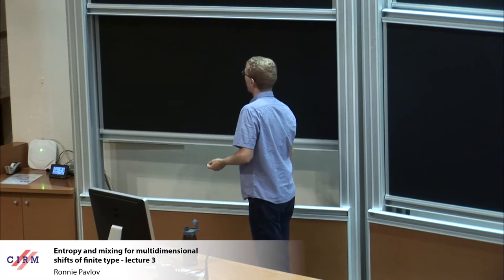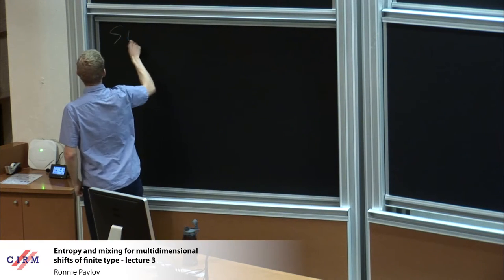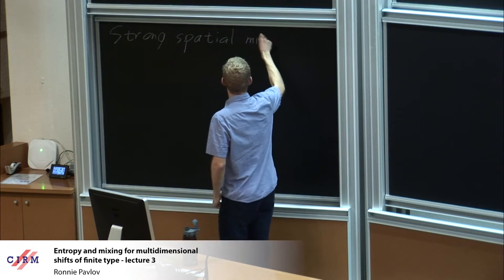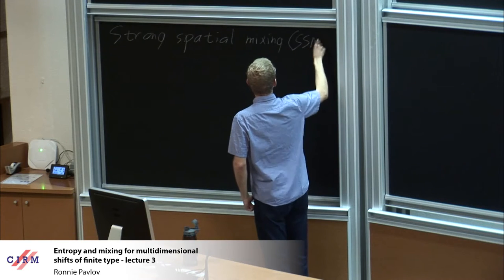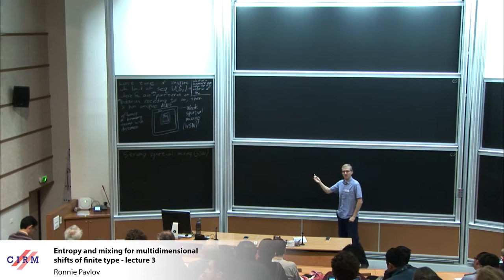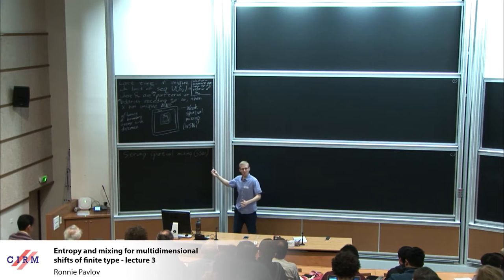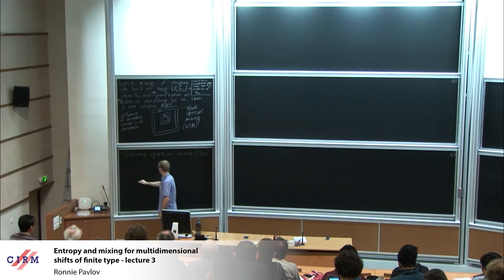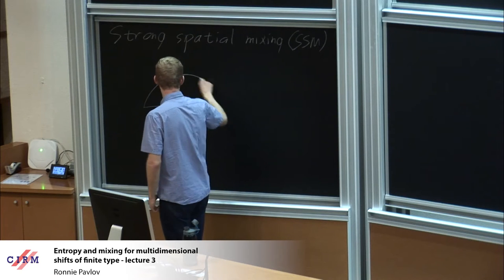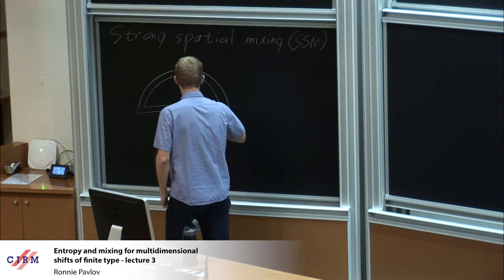Let's do one more definition, which is going to look pretty similar: strong spatial mixing, or SSM. What is strong spatial mixing? It had better be stronger than weak spatial mixing. Instead of writing an extremely formal definition, I mostly want to do it with just a picture. The picture is suppose that you've got some boundaries — maybe this is delta 1, and then let me draw a delta 2 that's actually not receding off to infinity.